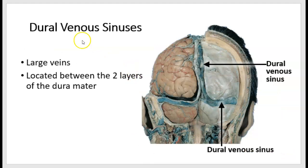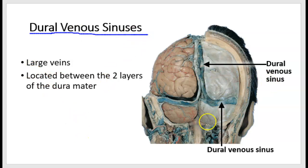Another structure related to the meninges, specifically the dura mater, are the dural venous sinuses. These are large veins located between the two layers of the dura mater. These veins collect deoxygenated blood being drained from the brain, and it will travel in the internal jugular veins to the heart and then to the lungs to be reoxygenated.